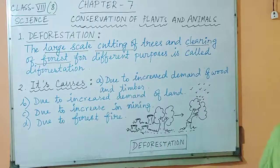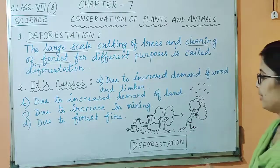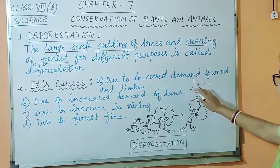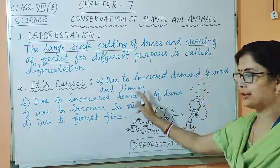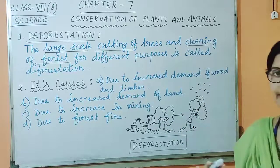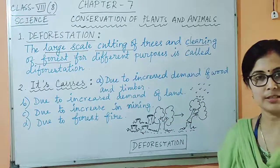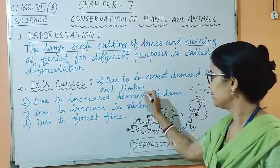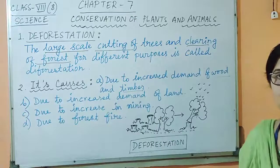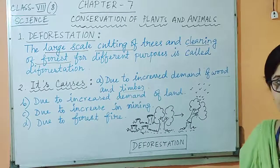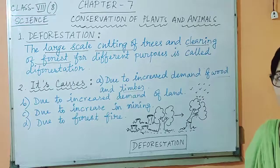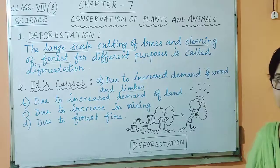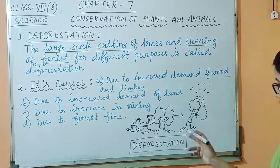Now let us see what are the causes of deforestation. Cause number one: due to increased demand of wood and timber by the human population. Day by day, with increase in population, there is increase in demand of wood and timber for construction and for firewood. So the first cause is increased demand of wood and timber, which leads us to cut down the trees.